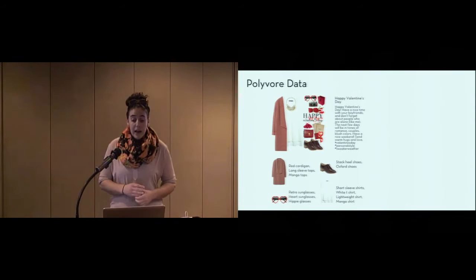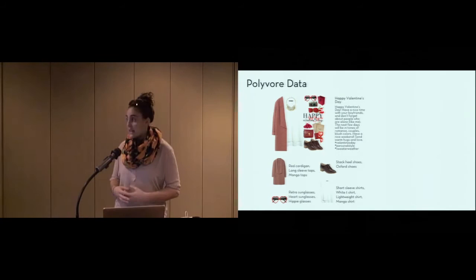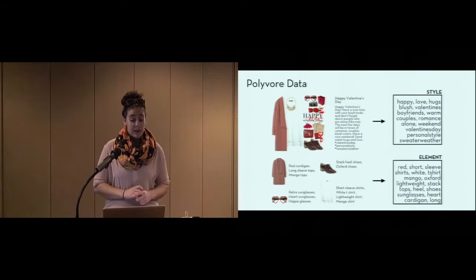Each of the items in the outfit have labels provided by Polyvore, which describe their design elements. So, the sweater here is labeled as a cardigan with a red color, long sleeve silhouette, and made by the designer Mango, and similarly for the other items. We process these two descriptions into a pair of parallel documents, one in the style language and the other in the element language. And we use these pairs of documents to train the PLTM.